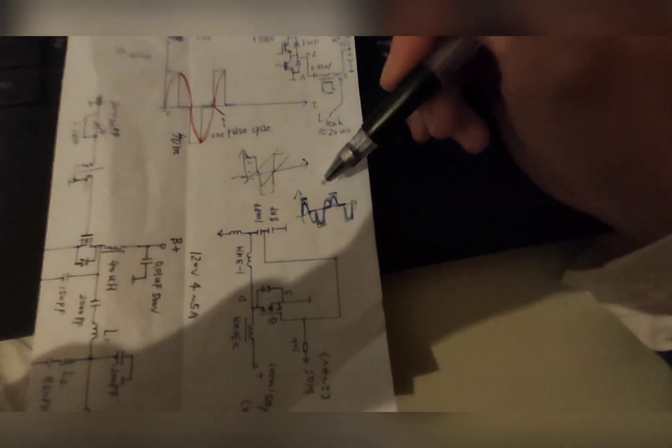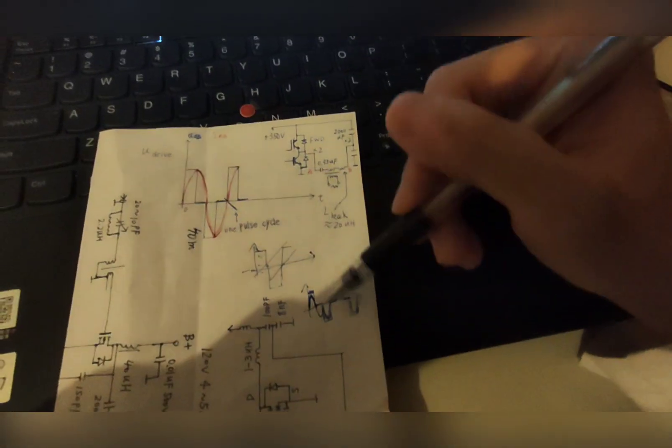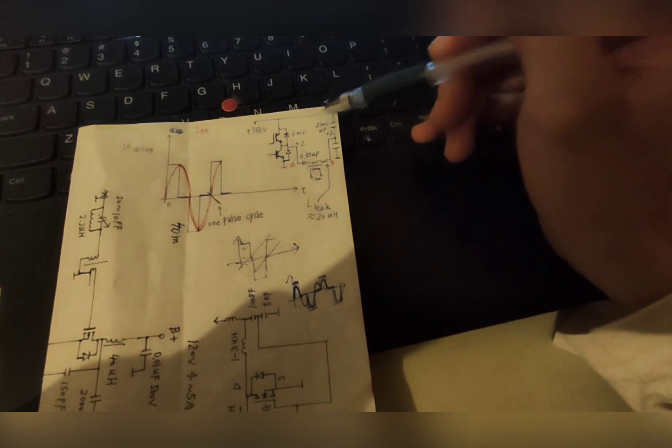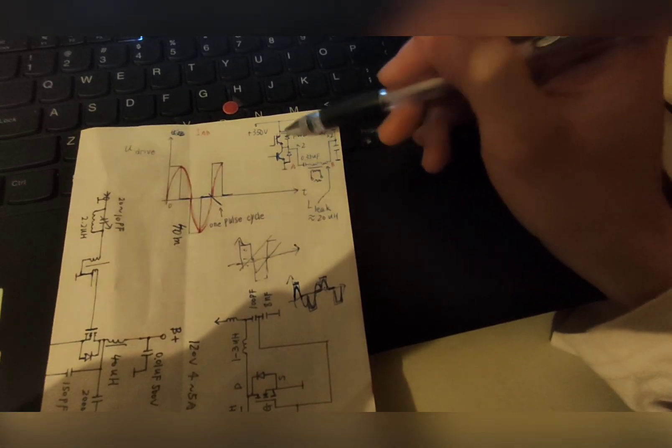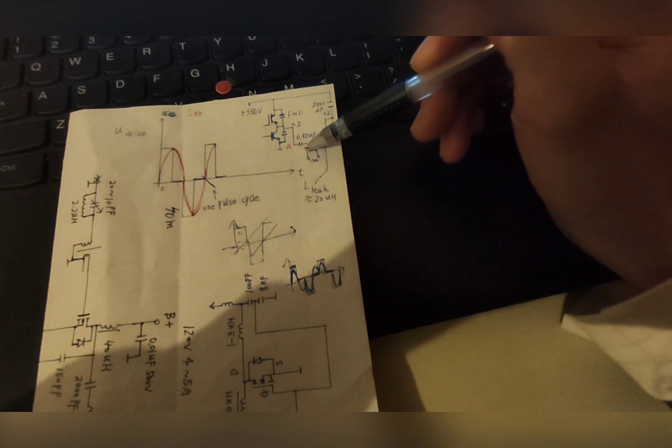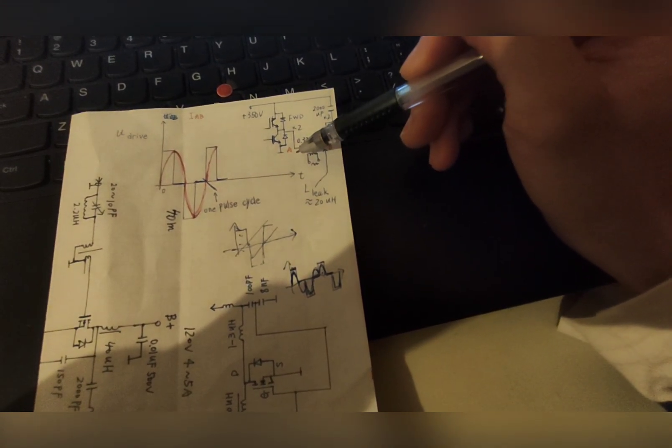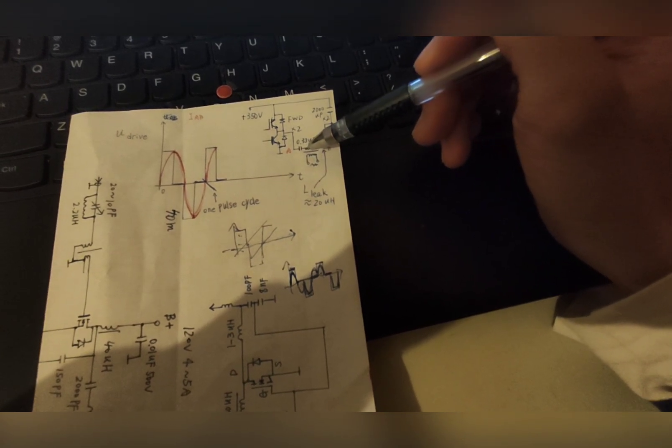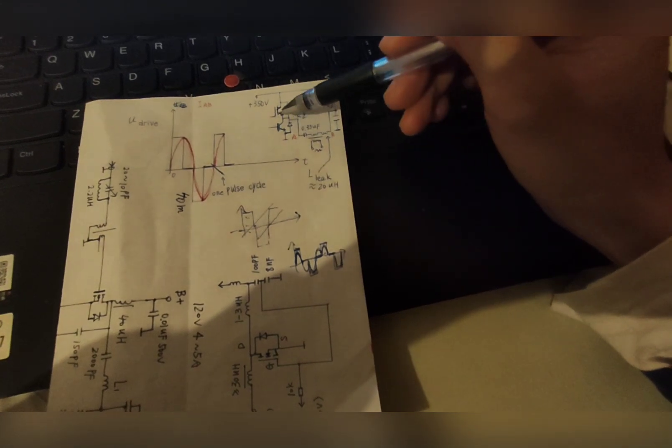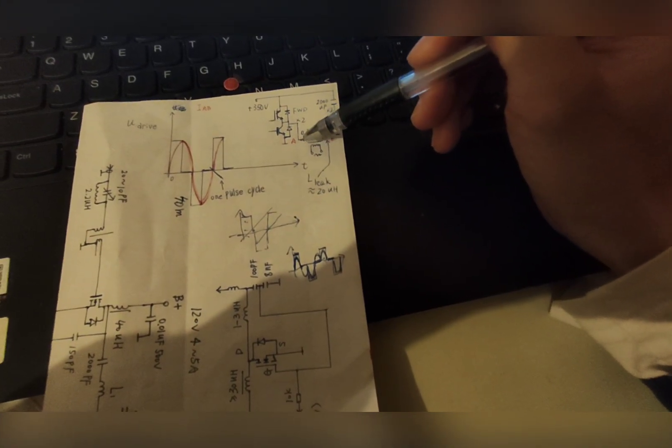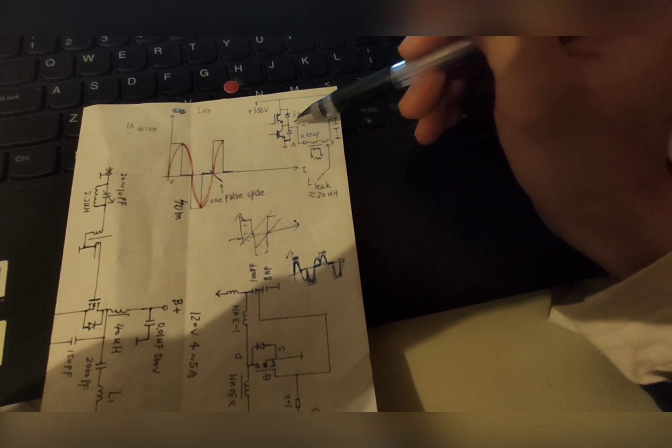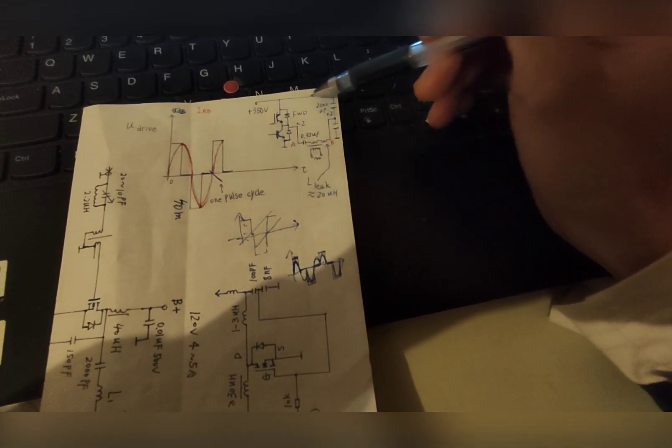What is happening here is actually during the first half wave cycle, the upper IGBT conducts, so the current goes counterclockwise and charges this capacitor. Left side is plus, right side is negative. And during this cycle, both IGBTs are off. So the plus side of the capacitor discharges through this freewheeling diode.